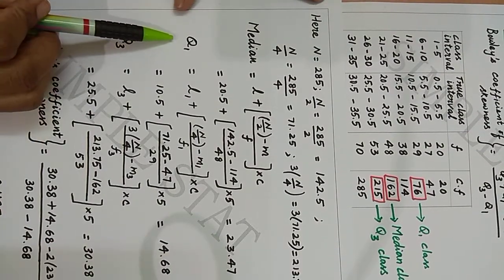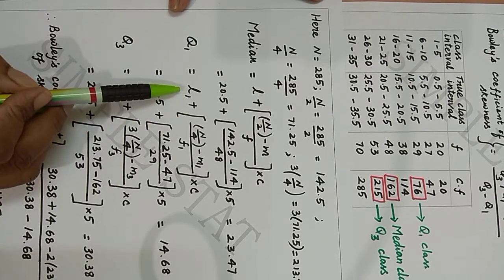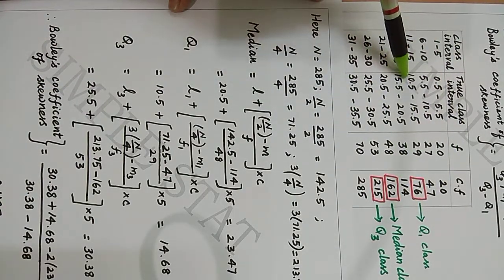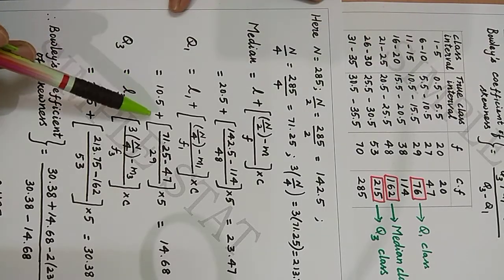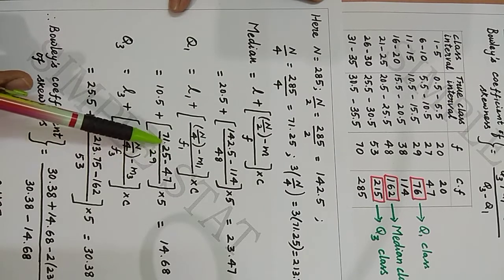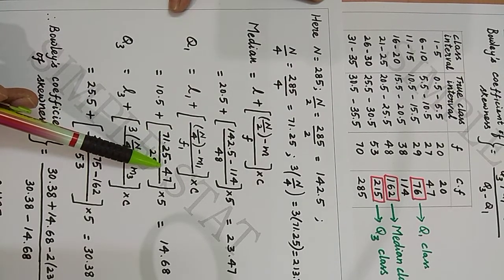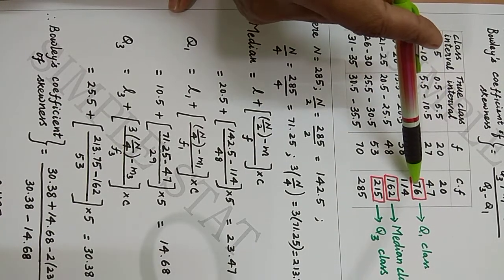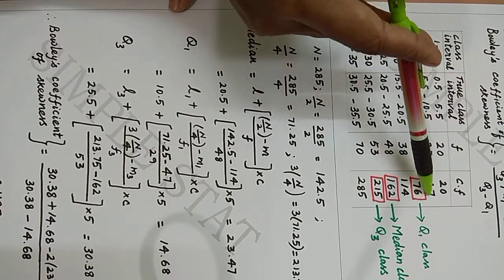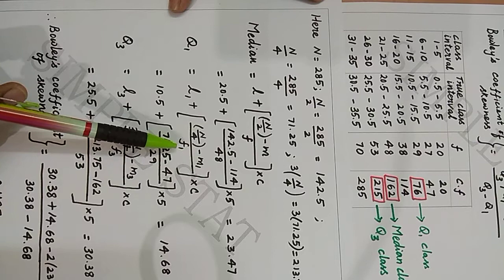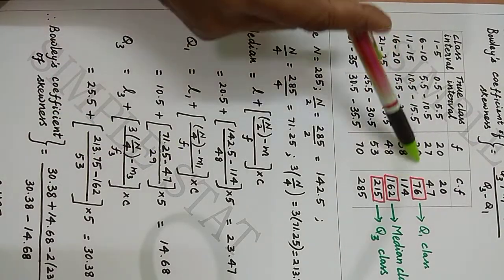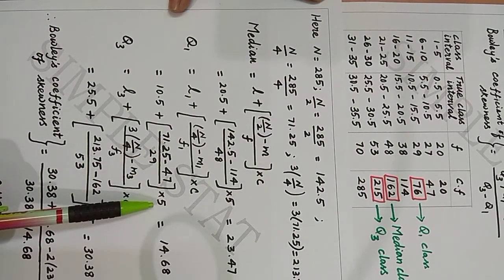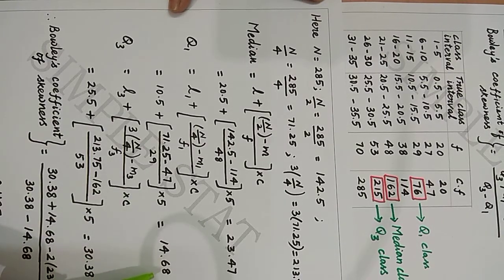Now let's proceed with Q1, given by L1 + (N/4 - M1) / F1 × C. L1 is the lower limit of the Q1 class. The Q1 class is 76, and the lower limit of the Q1 class is 10.5. N/4 is 71.25. M1 is the cumulative frequency value of the pre-Q1 class; since the Q1 class is 76, that cumulative frequency is 47. F1 denotes the frequency value of the Q1 class, which is 29, and C is the width of the uniform class interval, which is 5. We get Q1 = 14.68 on simplifying.